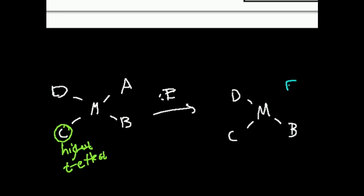And then my E is going to add trans to C because C has the highest trans effect, the ability to direct something into the trans position from itself. And that's why E adds there.